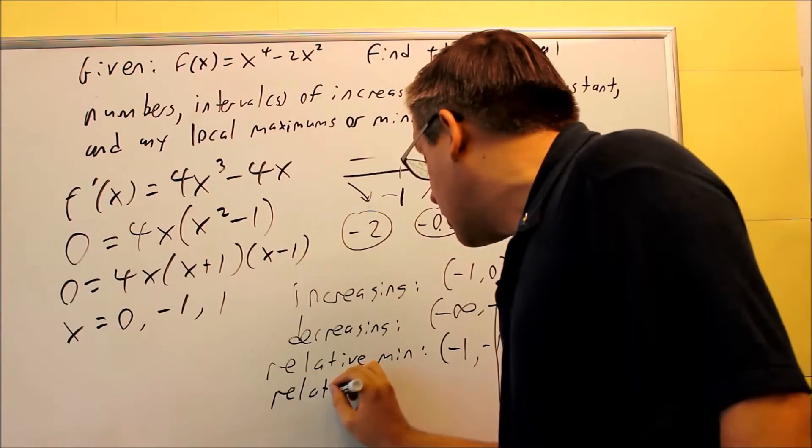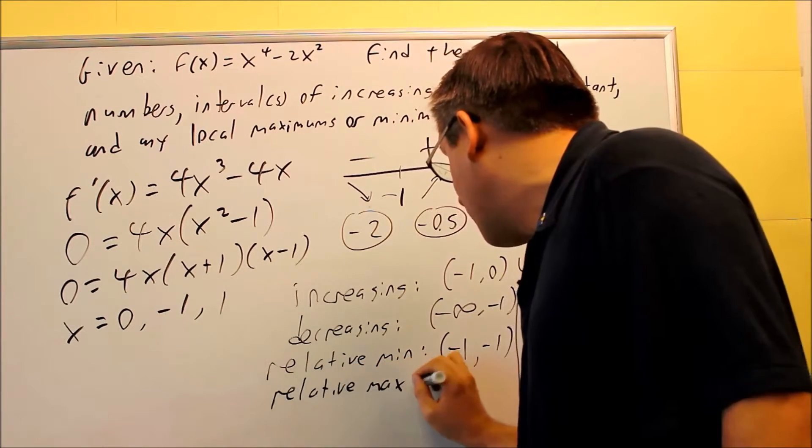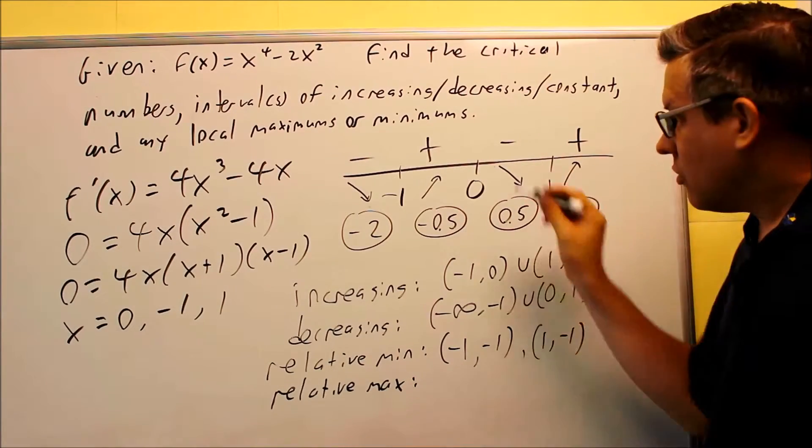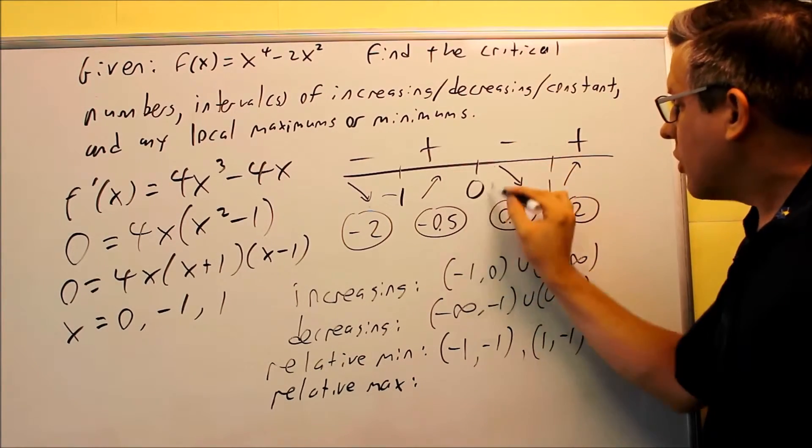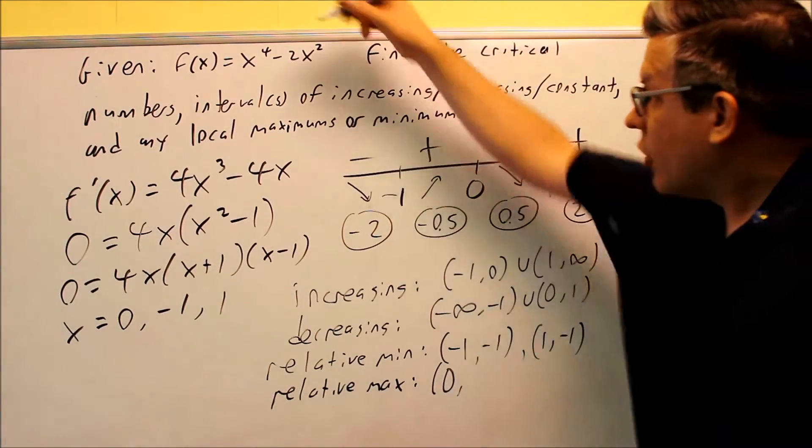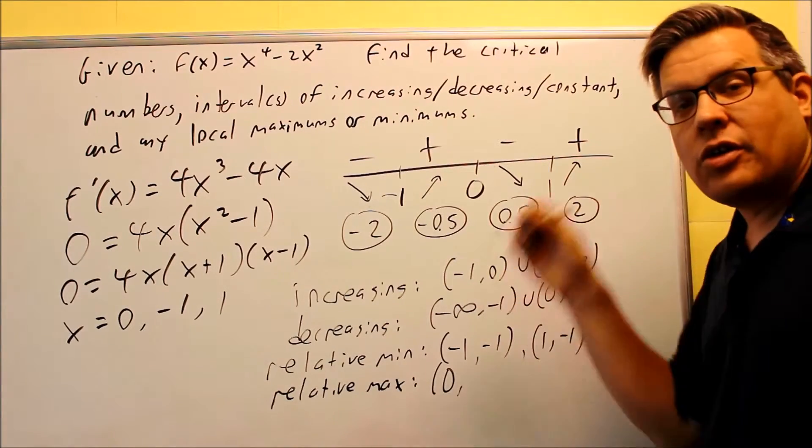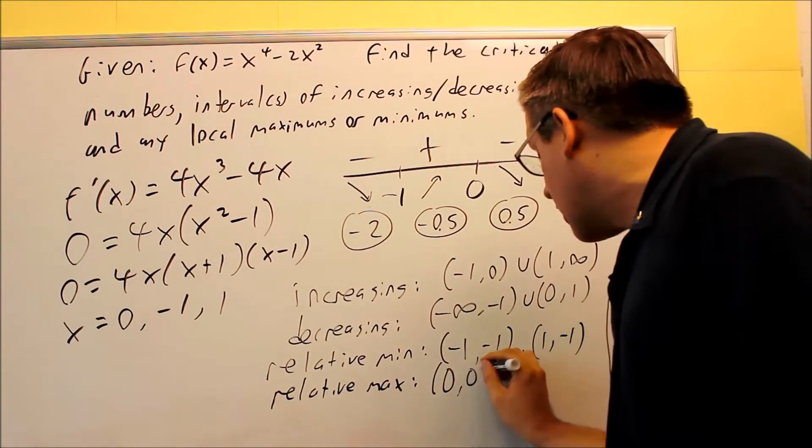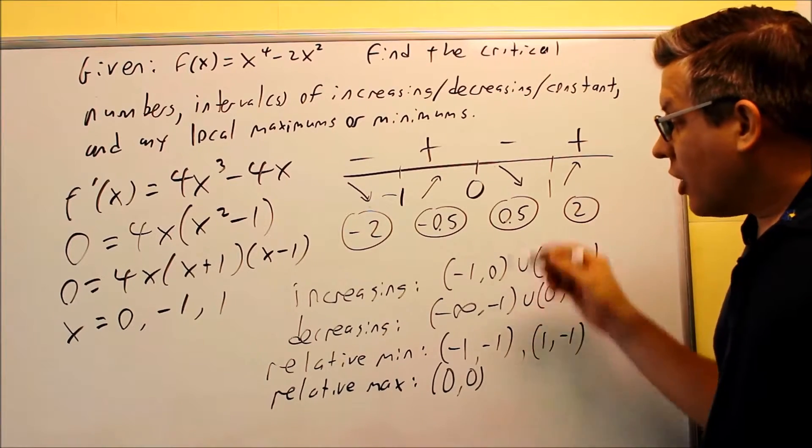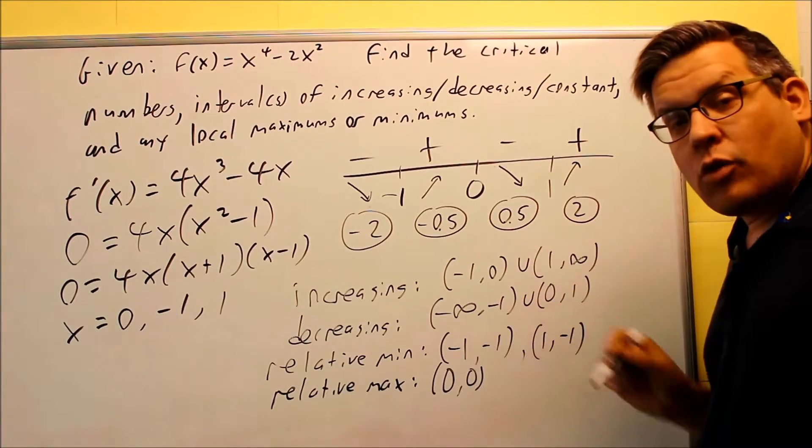The last thing we'll do is relative max. Now the relative max, we're going to look for uphill and then downhill. Uphill and downhill means that's going to occur at 0. Okay, so at 0, that's where it occurs. If we plug 0 back into here for both the x's and the original one, you're also going to get 0. So now we have everything that's asking for, increasing, decreasing, relative min and relative max.